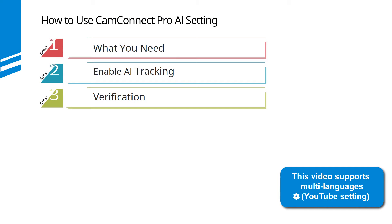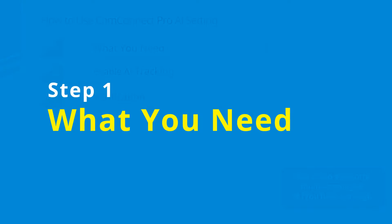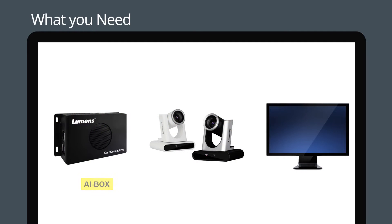This video is divided into three parts. Part 1: erase what you need. You'll need a Lumens AI box, a VC camera, and an HDMI monitor.